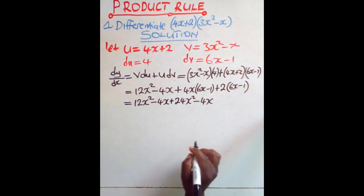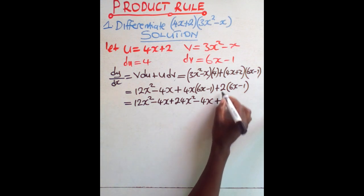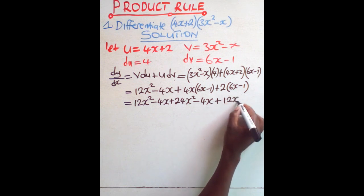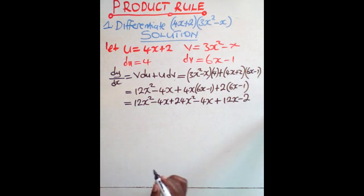Next, we open the last brackets. So plus 2 times 6x is going to be 12x. 2 times negative 1 would be negative 2.